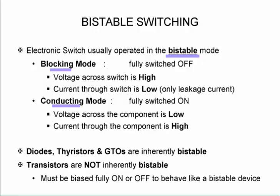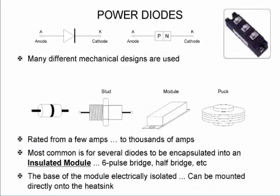With diodes, thyristors and gate turn-off thyristors they are inherently bistable. Transistors are not inherently bistable. So we must make certain that we bias them fully on or fully off, otherwise they will operate in the linear region where they will overheat and get damaged.